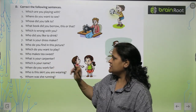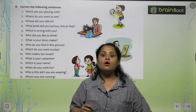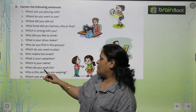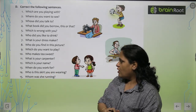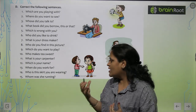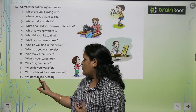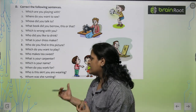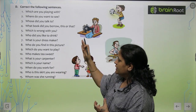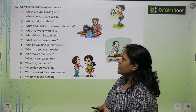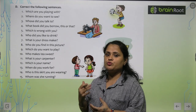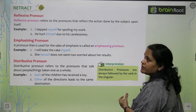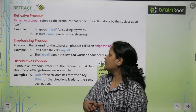'What is your carpenter?' — Correct: 'Who is your carpenter?' 'When do you work for?' — Correct: 'Whom do you work for?' or 'What do you work for?' 'Whom was she running?' — Correct: 'Why was she running?' So you have been given these interrogative sentences; you need to fill in the correct pronoun. Some I have told you, the rest of the interrogative sentences will be done by you only.